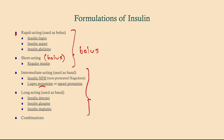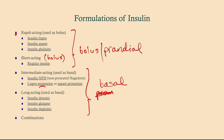Bolus and prandial are the same thing — I wanted to mention that. Bolus and prandial mean the same thing. Basal insulin is the insulin we give to last a long period of time. Then there are combination insulins, which we'll come to in a bit.